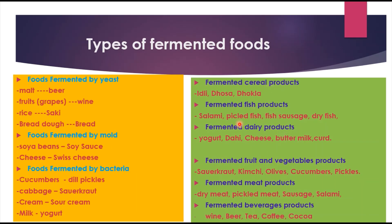Depending upon the raw materials, fermented foods include: fermented cereal products like idli, dosa, and dhokla; fish products like salmine, pickled fish, fish sauce, and dried fish; dairy products like yogurt, dahi, cheese, buttermilk, and curd; fermented fruit and vegetable products like sauerkraut, kimchi, olives, cucumbers, and pickles; fermented meat products like pickled meat, sauces, salami, and dry meat; and fermented beverage products like wine, tea, coffee, and cocoa. These are the different types of fermented foods classified by microorganism type and by raw material type.